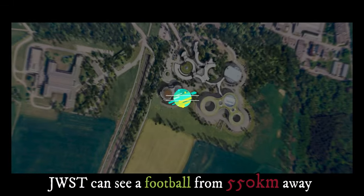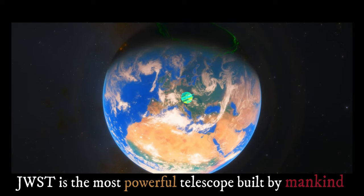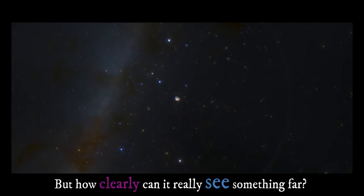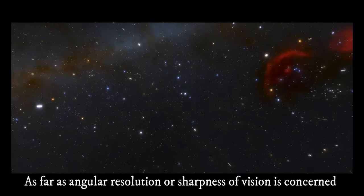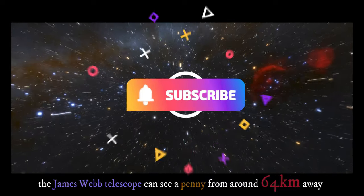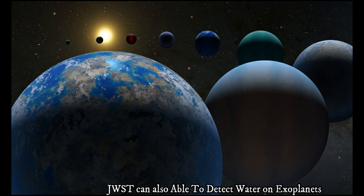JWST can see a football from 550 kilometers away. JWST is the most powerful telescope built by mankind, but how clearly can it really see something far? As far as angular resolution or sharpness of vision is concerned, the James Webb telescope can see a penny from around 64 kilometers away.